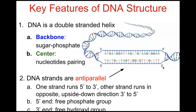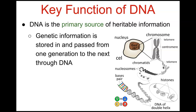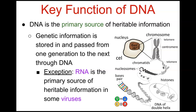The key function of DNA is that it is the primary source of heritable information — genetic information is stored in and passed from one generation to the next through the DNA molecule. The exception is RNA, which is the primary source of heritable information in some viruses.